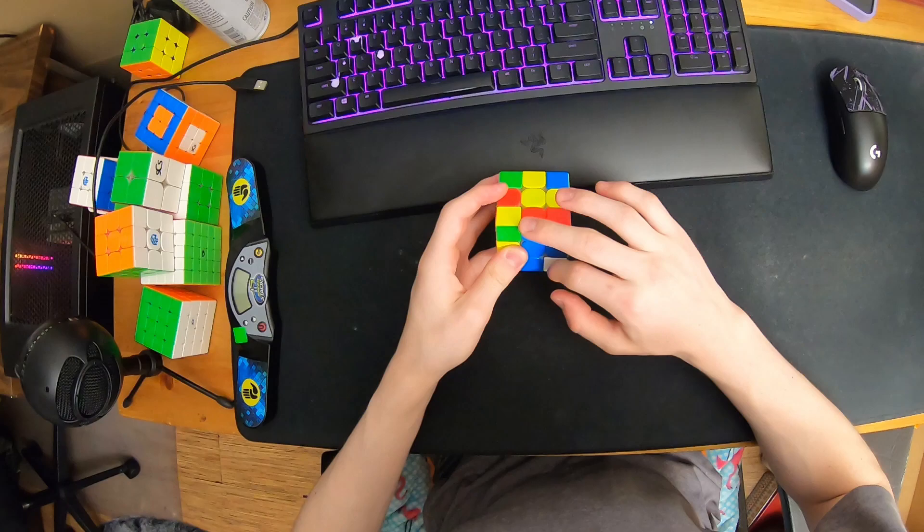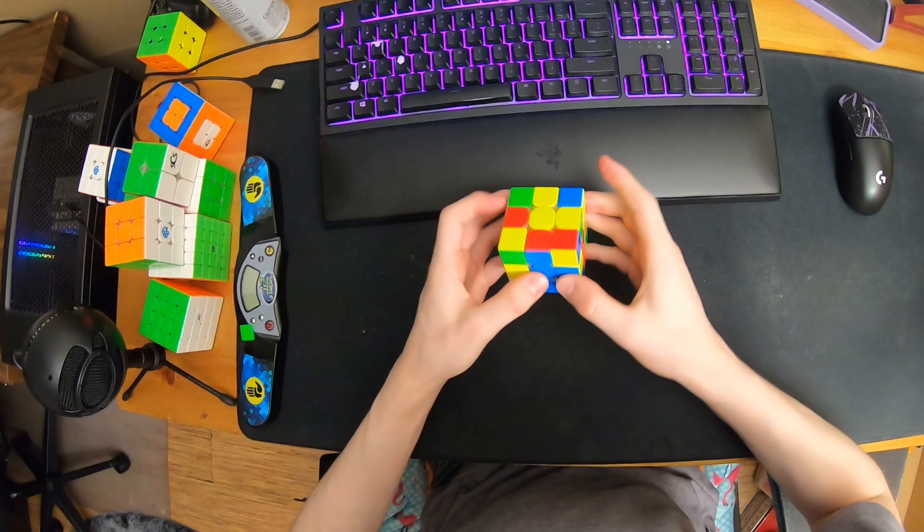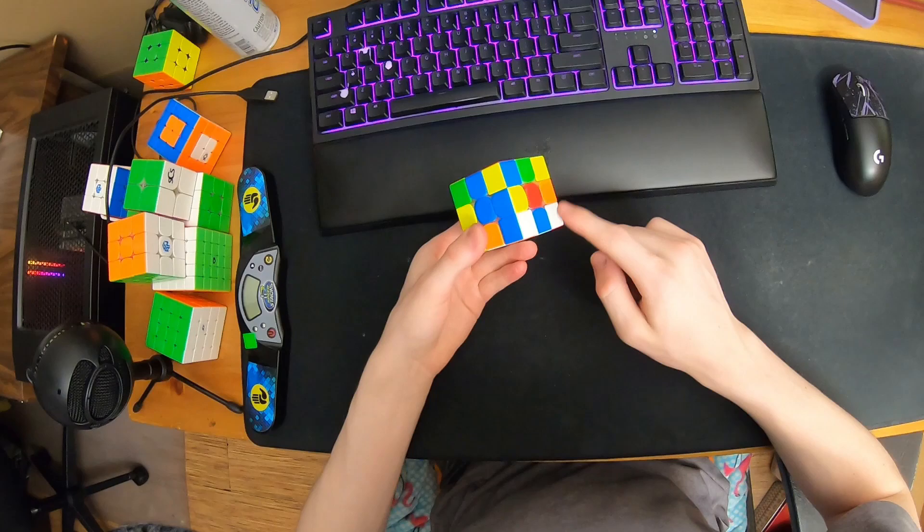When I insert this, this will also be a three mover, but I didn't see that. I just saw that this requires a rotation and this would do, so I did a wide U prime.